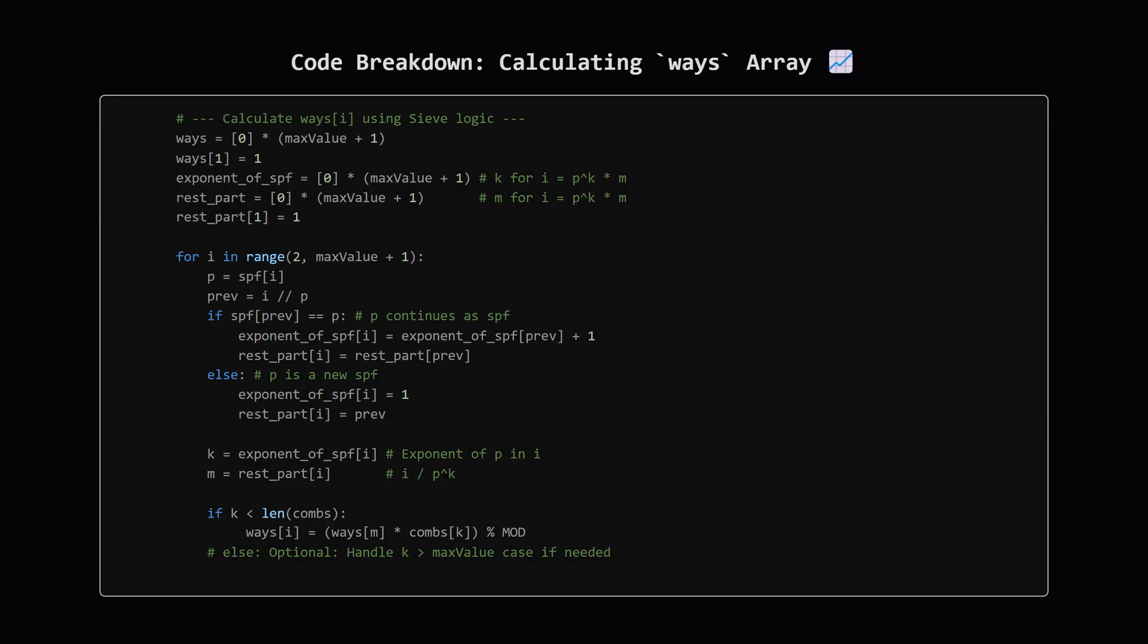This is the core loop where we build the ways array. We iterate from 2 up to maxValue. For each number i, we get its smallest prime factor p from our SPF array. We then look at the number previous = i / p. We cleverly track two things: exponent, which is the exponent K of the smallest prime factor p in i, and rest_part, which is the part M where i = p^K × M. Finally, we use our multiplicative property. ways[i] is calculated as ways[rest_part], the ways for the part without the p^K factor, times combs[exponent], the ways corresponding to the p^K factor which we pre-computed, all modulo MOD.